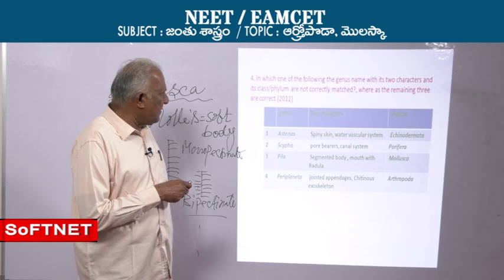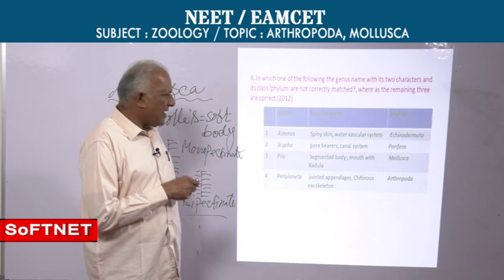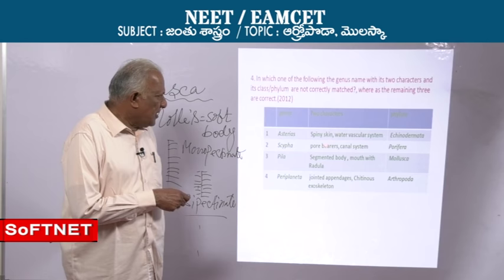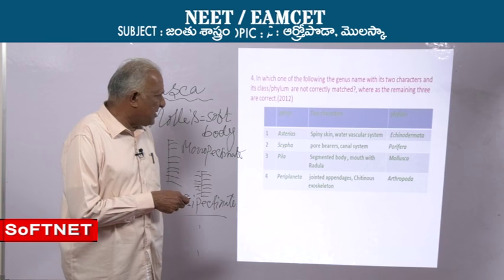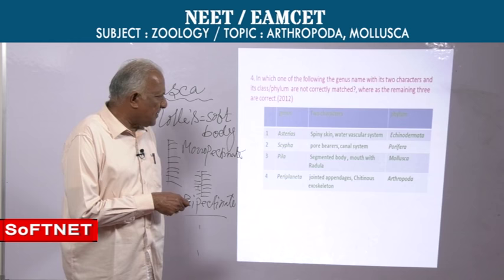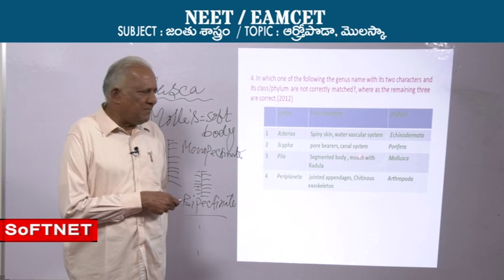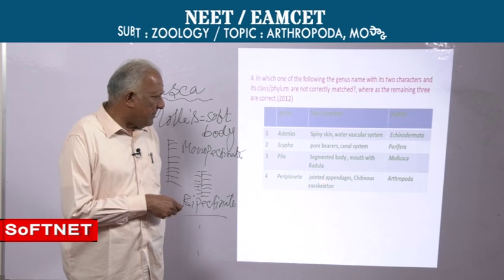The question asks which genus name with its two characters and its class/phylum is not correctly matched, while the remaining three are correct. Asterias: spiny skin, water vascular system, Echinodermata — correctly matched. Canal system, two layers — Porifera — correct. Segmented body versus unsegmented body — that is the incorrect match. Jointed appendages and chitinous exoskeleton — correct.